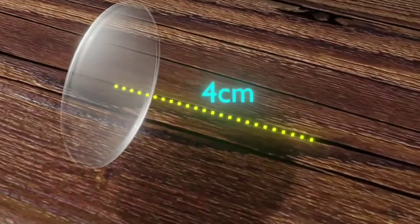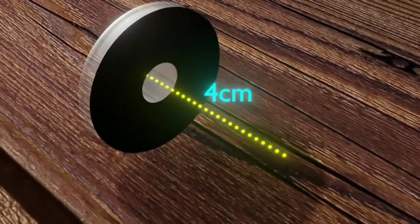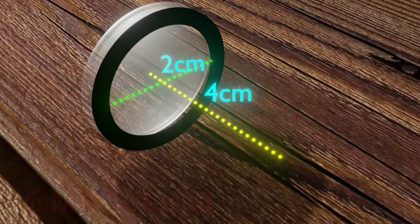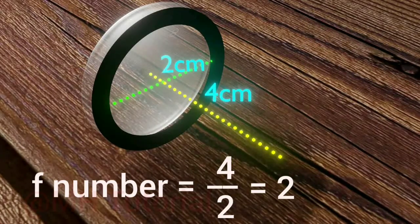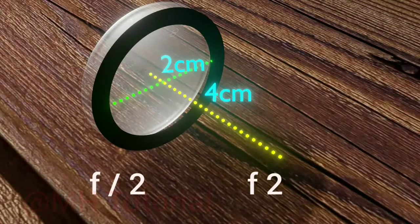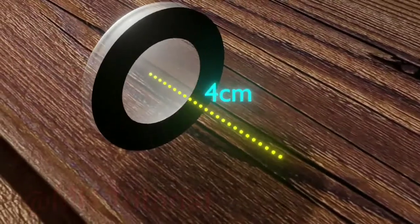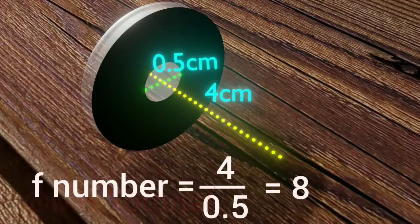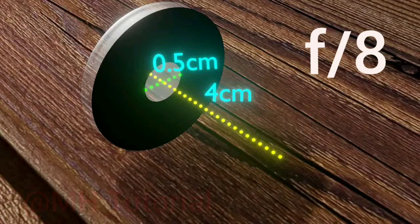Let's take an example. If a camera has a lens of focal length 4 cm, and by adjusting its aperture you bring it to 2 cm of diameter, then its f-number is 4 divided by 2, or simply 2, expressed as f/2. Similarly, by adjusting the aperture to 0.5 cm of diameter, you get an f-number of 8, or f/8, and thus it goes on.